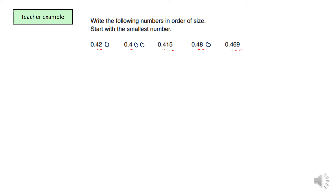What you should notice now is that every single number starts with 0.4 and then has two extra digits, giving three decimal places in total. Now if you look at the numbers ignoring the decimal places: this one is 420, this one is 400, this one is 415, this one is 480, and this one is 469.